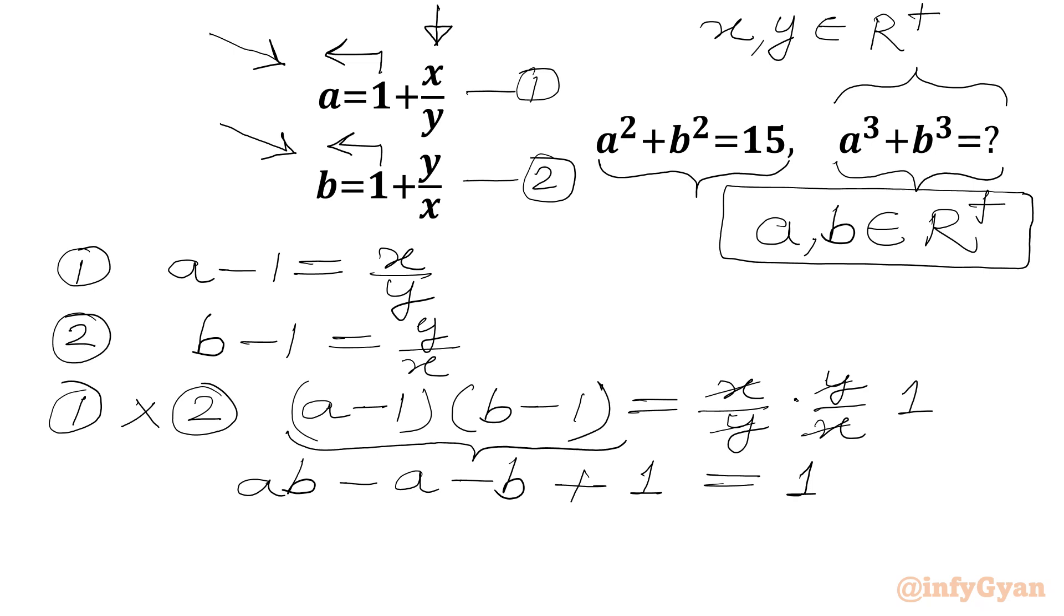Now we will subtract 1 from both sides: ab minus a minus b equals 0. We will add a plus b to both sides: ab equals a plus b. This equation will be equation number 3.